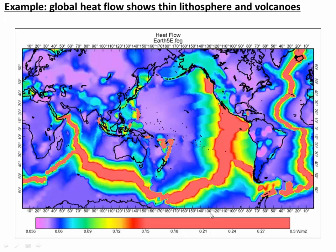Here's an example of some of these places shown on a global map showing heat flow — red is high, purple is low. We see the mid-ocean ridges here in red; that's places where the mantle is coming up almost right to the surface and the crust is very very thin, so heat flow is really high. We also see some volcanoes here, and a lot of this in red are subduction zones that have active volcanoes right around them.